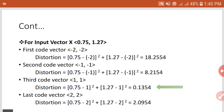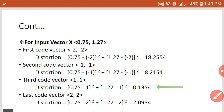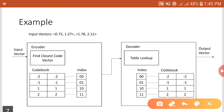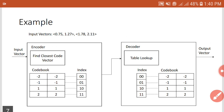For code vector (1, 1), the distortion is minimum. Therefore, the closest code vector is (1, 1) for input vector (0.75, 1.27). Its index is '10' (binary), which is sent to the decoder. The decoder performs a table lookup, finds index '10', and retrieves code vector (1, 1). So the reconstructed vector at the decoder side for input (0.75, 1.27) is (1, 1).